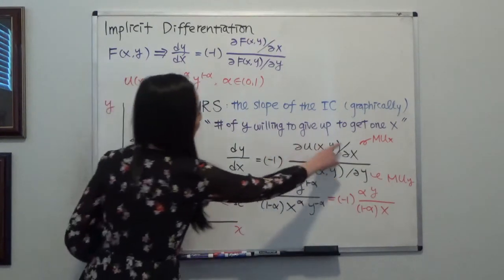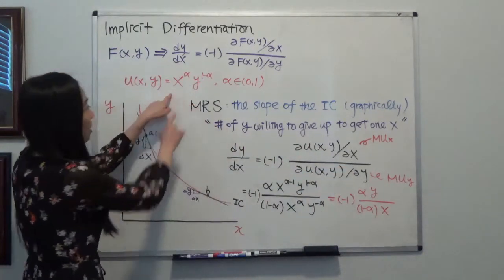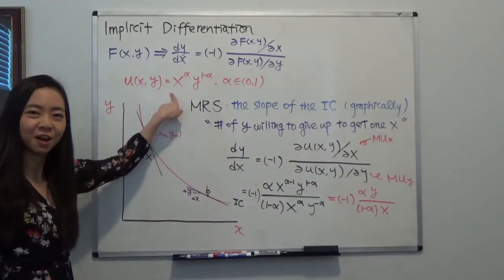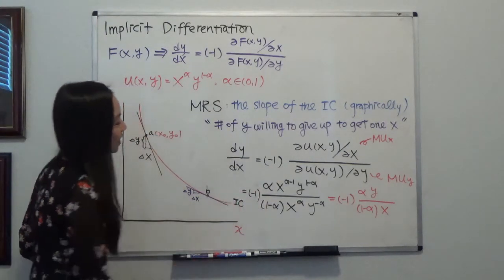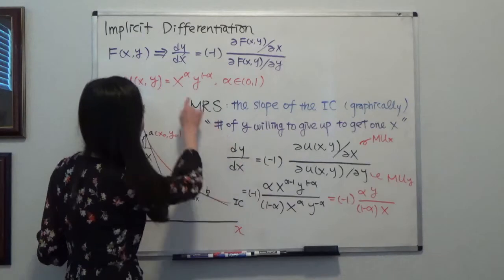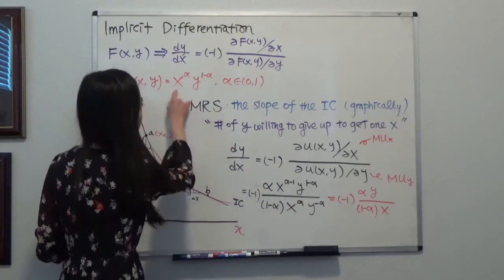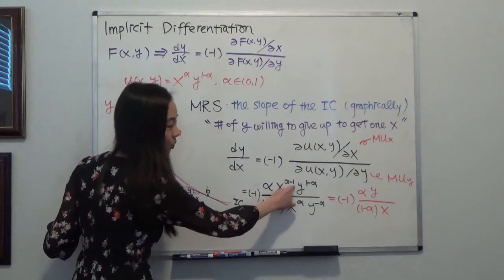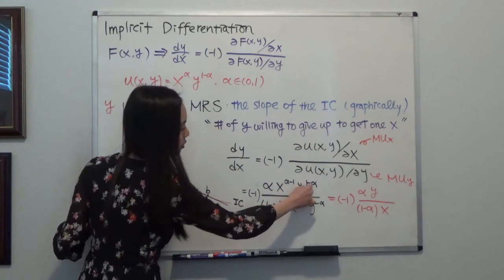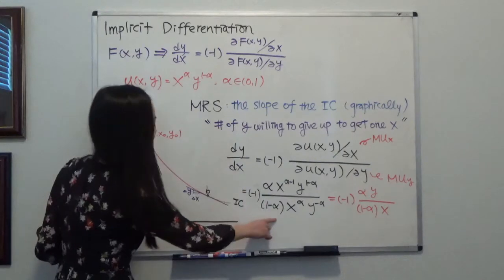So we are going to take a partial derivative of this Cobb-Douglas utility function. So don't forget about your negative 1 here. And upstairs, you take partial derivative with respect to x. So you have alpha, x times alpha minus 1, y to the power of 1 minus alpha.